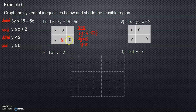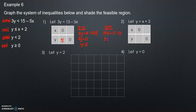When y equals zero: 3y equals 15 minus 5x. Moving 5x to the left-hand side, positive 5x equals 15, so x equals 3. So here is 3.